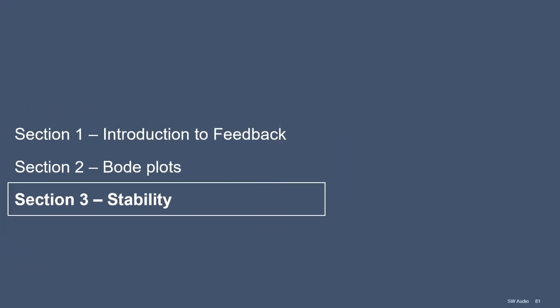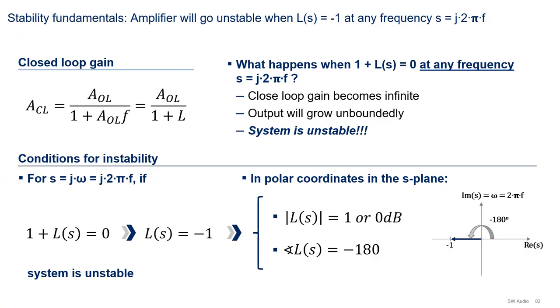Now let's go into our last topic, stability. To discuss stability, let's start by looking at the closed-loop gain equation, which we derived using Black's formula. Quick question. What happens when 1 plus L(s), the denominator of the closed-loop gain equation, equals zero at any frequency s equal j 2π f? Note that the question is not for any complex frequency. It is for any frequency of the form s equal j 2π f.